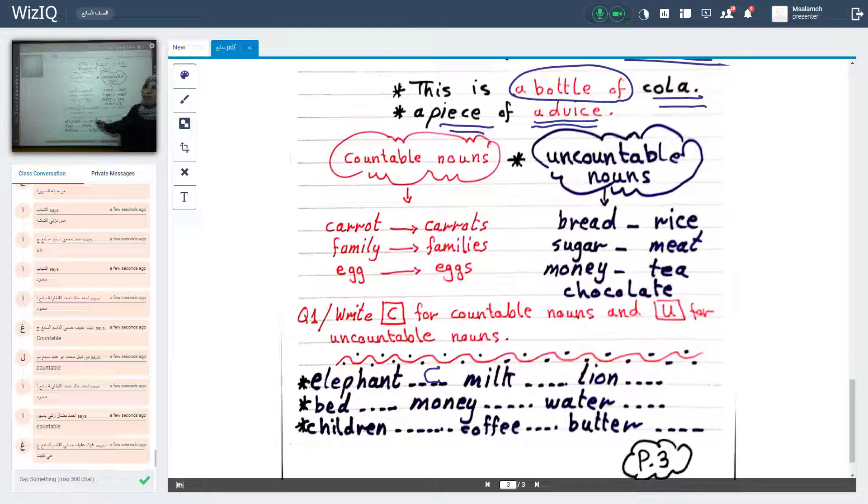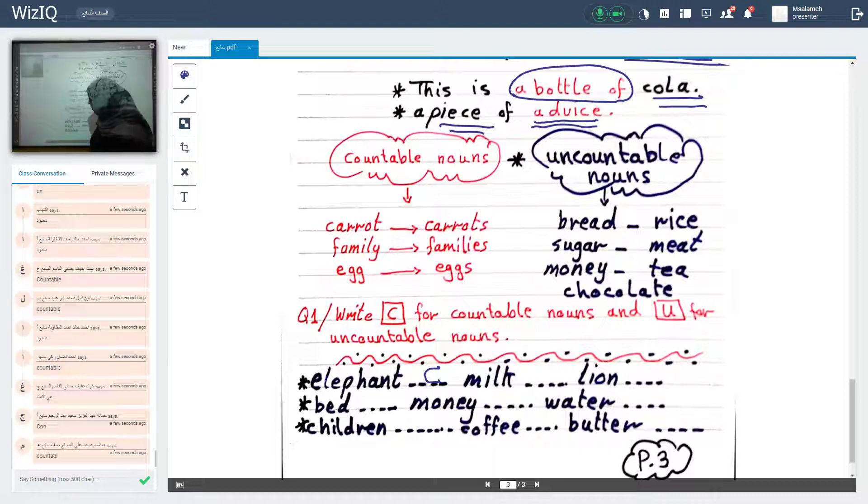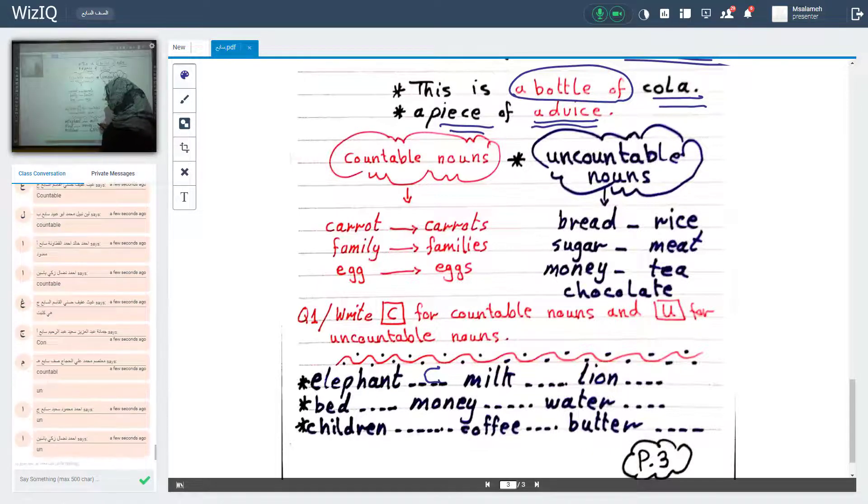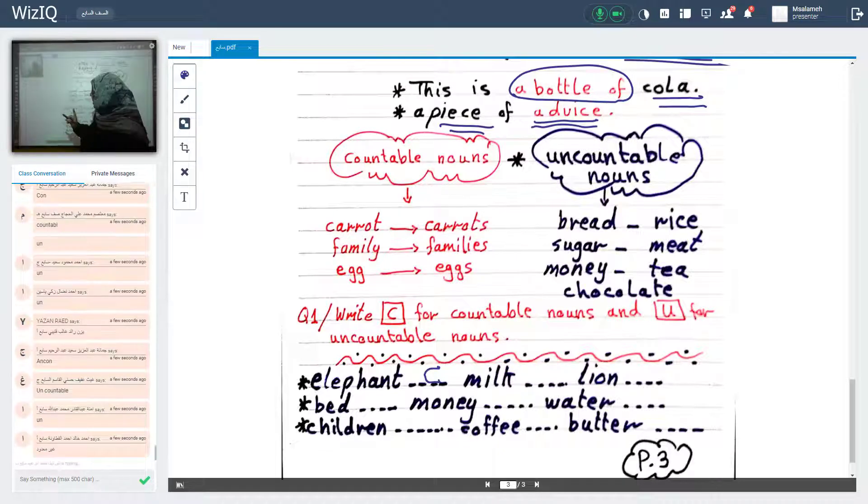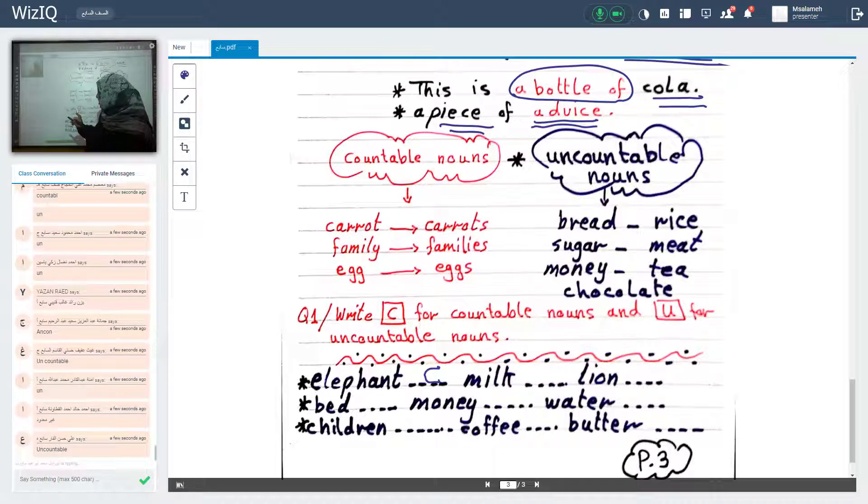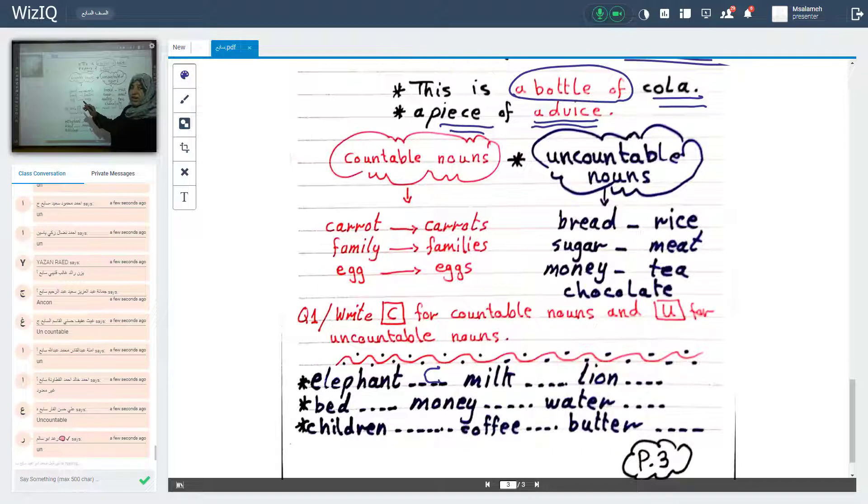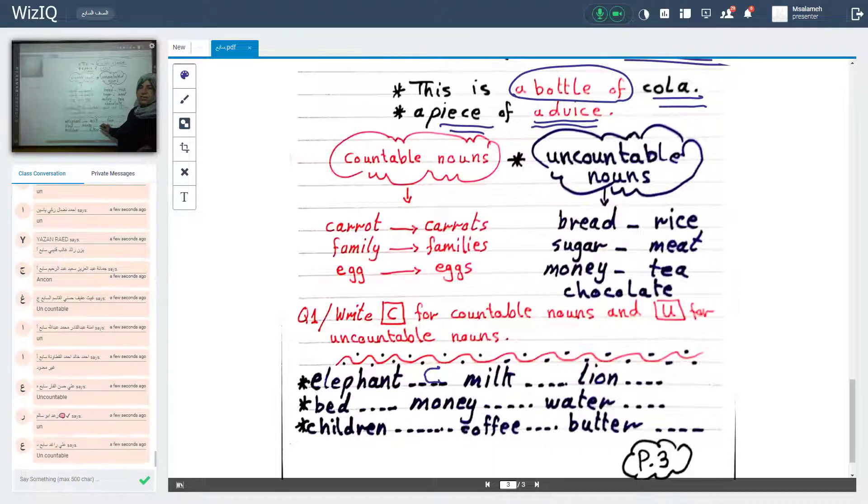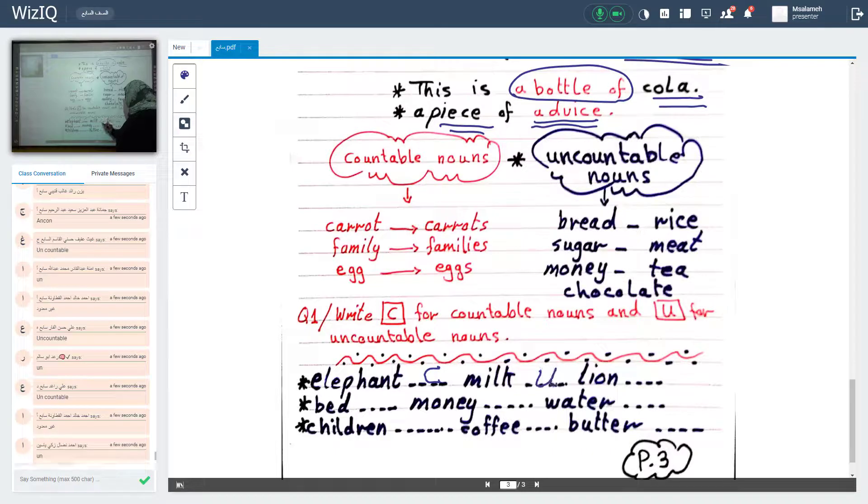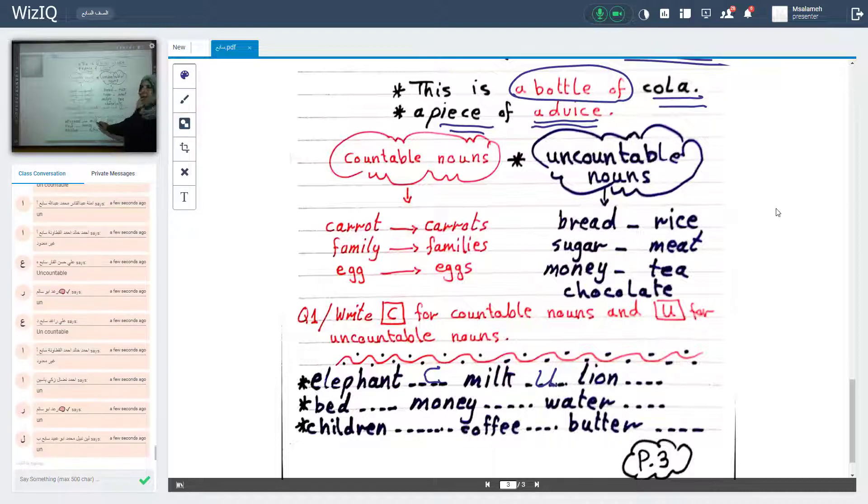What about milk? Who can tell me? Milk? It's wrong. Wrong. Uncountable. Uncountable. Sorry. Milk. Yes. Yes. It's good. Uncountable. Good. Uncountable. We can't count it.